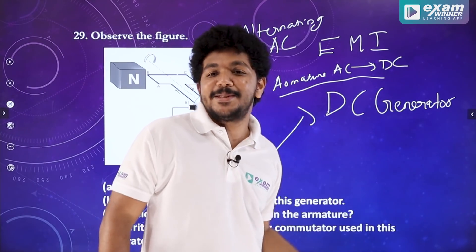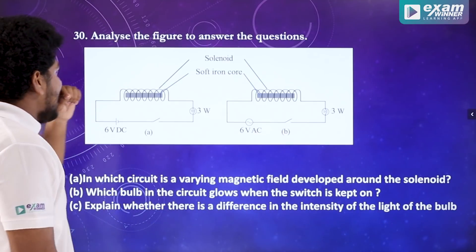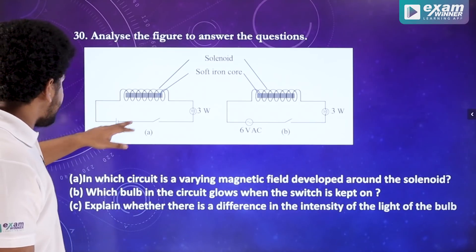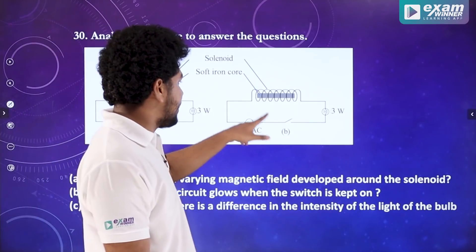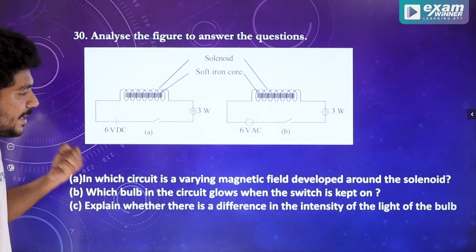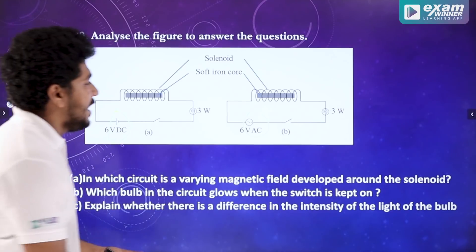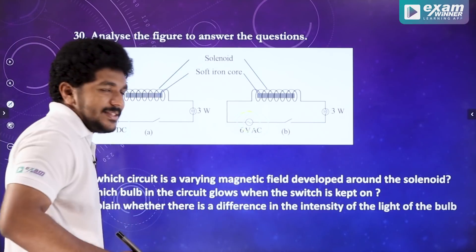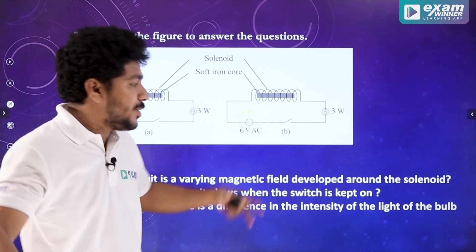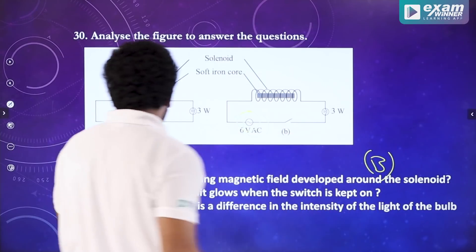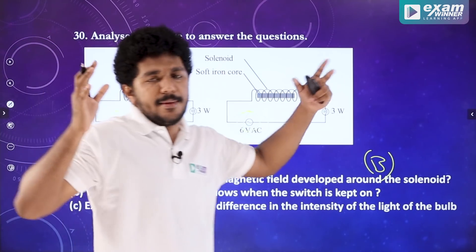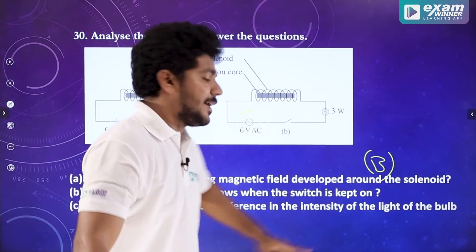Then we have a question. Analyze the figure to answer the question. What is a DC battery? What is an AC battery? A DC battery is constant, so there is a constant magnetic field — one magnetic field.